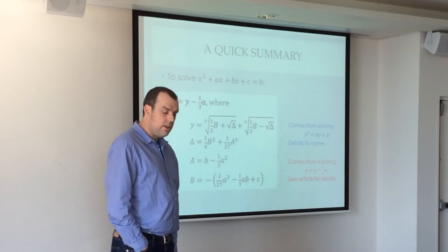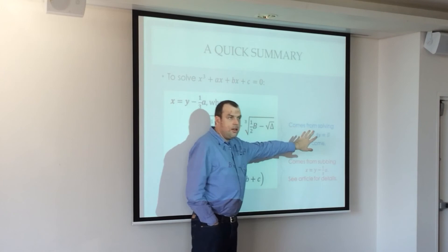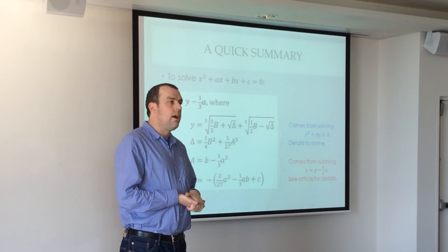So this comes from the substitution that we made. This comes from solving the depressed cubic, which we're going to look at in detail. And just a comment here. We're doing this part algebraically. The part we just did with the substitution. Of course, you can do the substitution of x equals y minus a third a, and do all the expanding and simplifying in terms of a, b, and c, right?